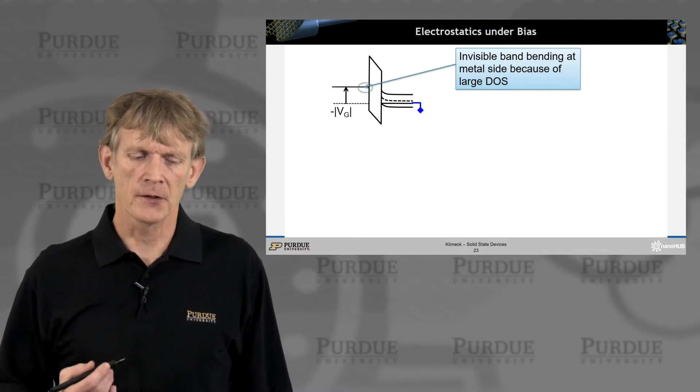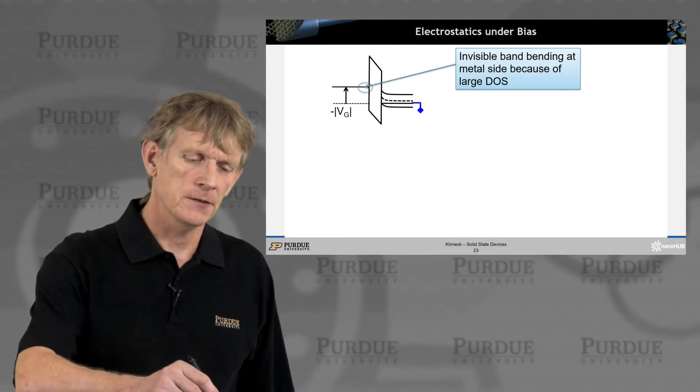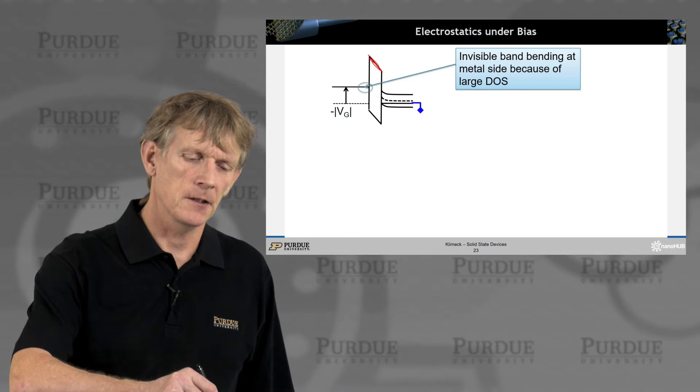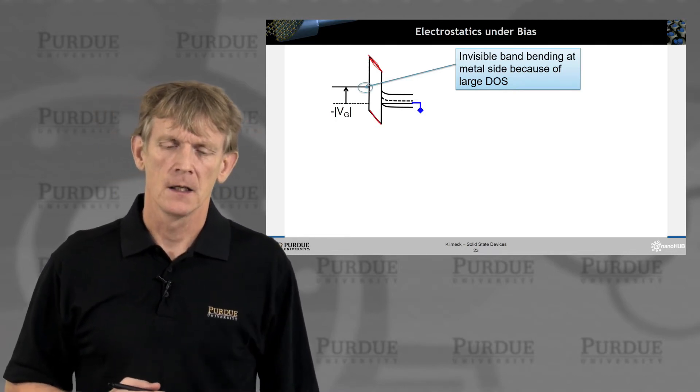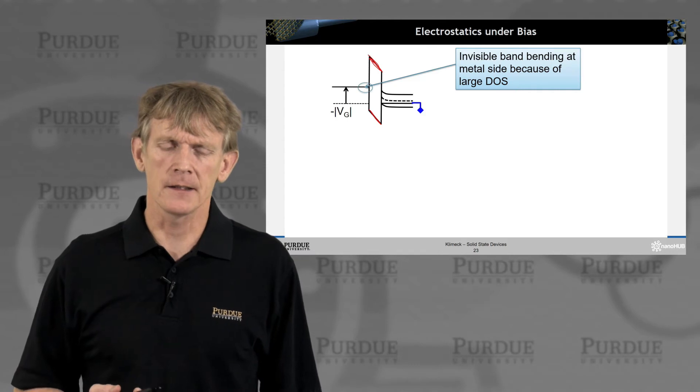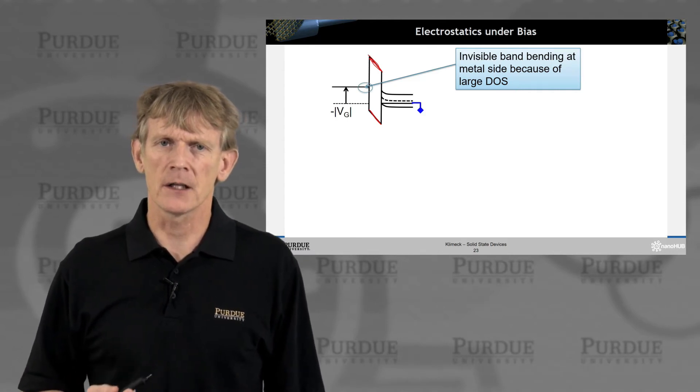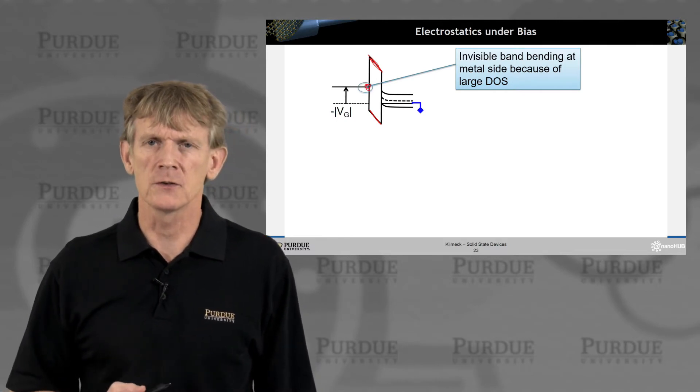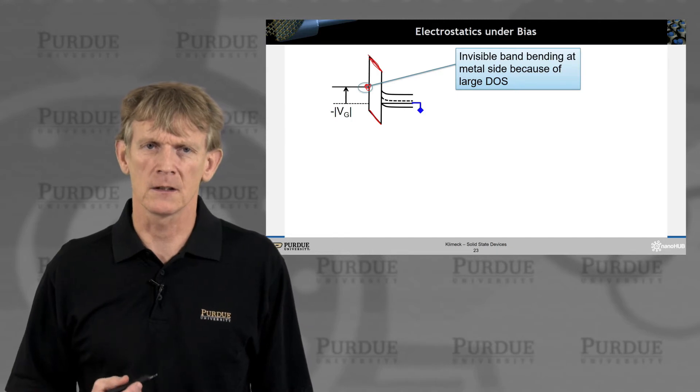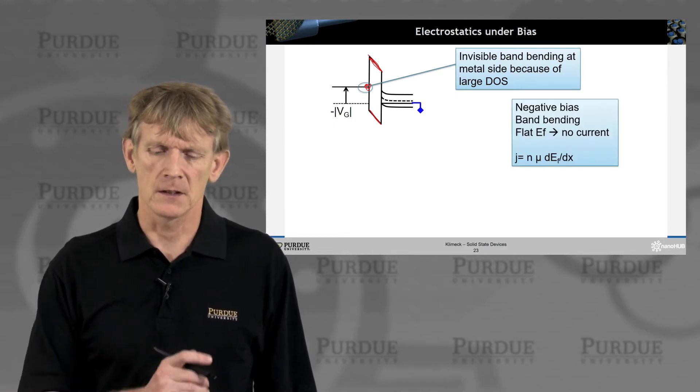And a couple of things you notice, to start out with, there's a constant electric field here in the oxide because there's no charges in it. And just like with the Schottky diode, where we've argued that there's so much density of states available in the metal, that there is negligible band bending here. So there is no band bending we'll need to consider in the metal, because of the large density of states.